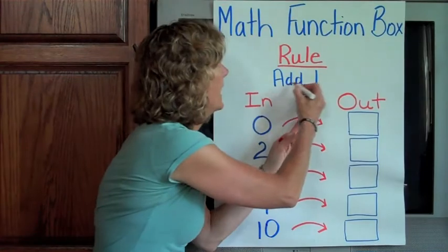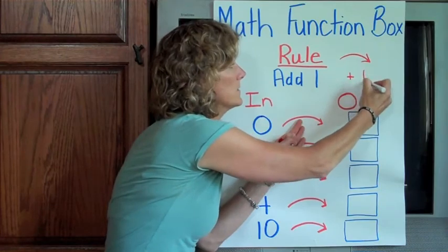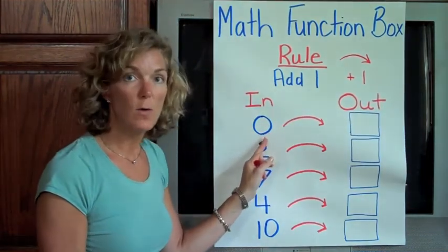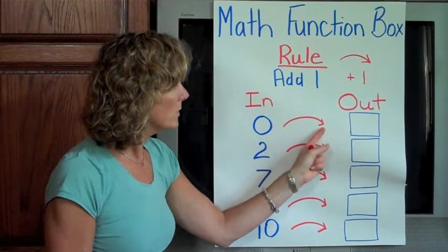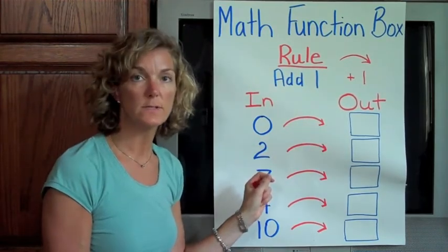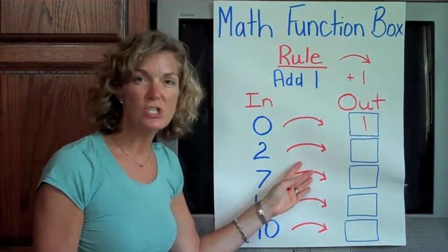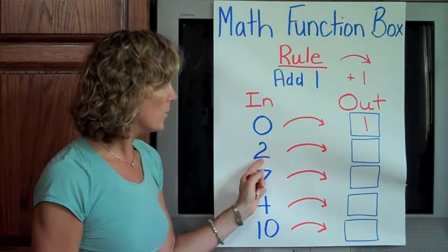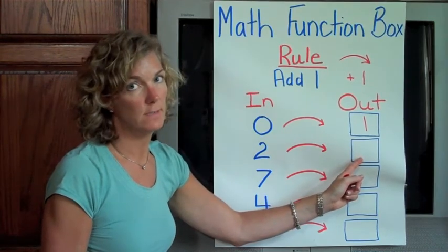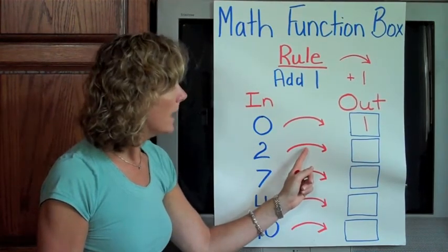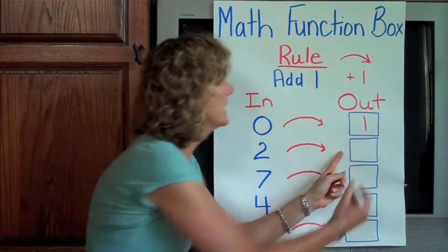Anytime we see our arrow, we've got our rule — it's going to be plus 1. So if we have 0 going into our function box, we know 0 goes in, our rule is add 1, what comes out? 1. You can also think of your function box as a machine. If I put 2 into the machine, what comes out? We know our rule is to add 1, so 2 add 1 is 3.